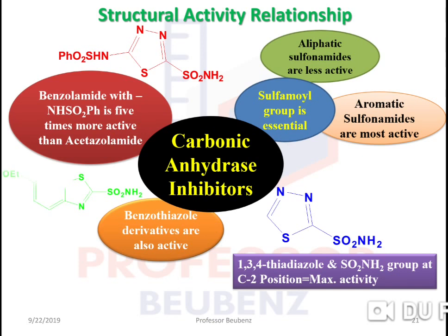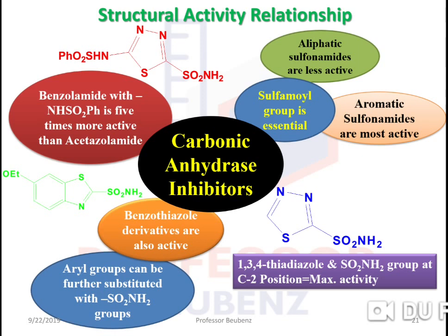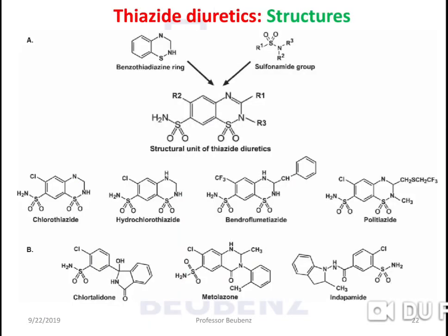Benzothiazole derivatives are active carbonic anhydrase inhibitors. The aryl group can be further substituted with -SO₂NH₂. Instead of having substitution like the aryl group, we can have more substitutions with -SO₂NH₂.